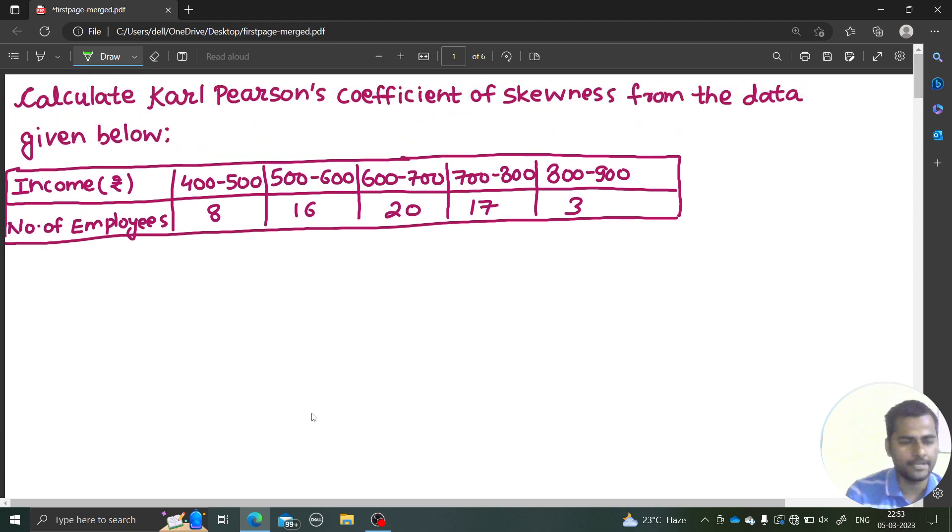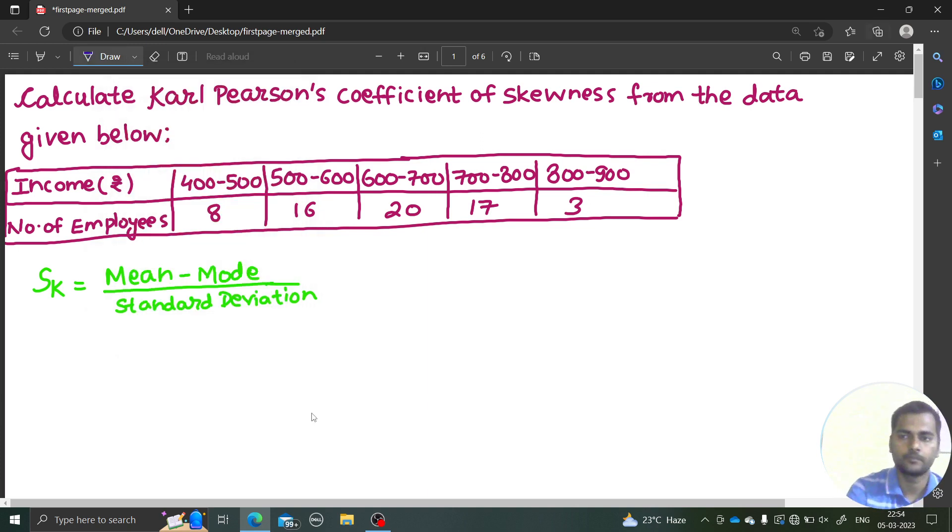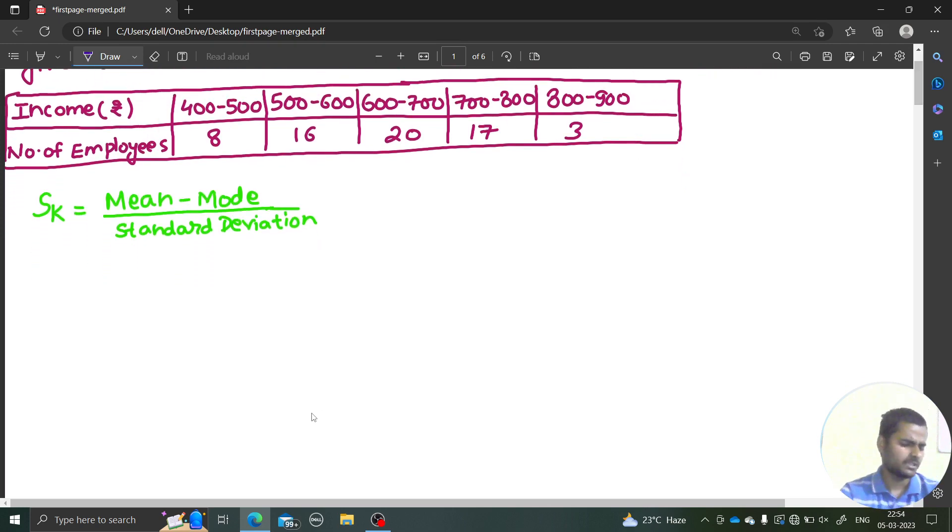In Carl Pearson's coefficient we need mean, mode, and standard deviation. So let's calculate, let's draw the table for that. I hope you are keeping calculator handy. If not, you can still do your calculations, but having a calculator is an advantage for you.